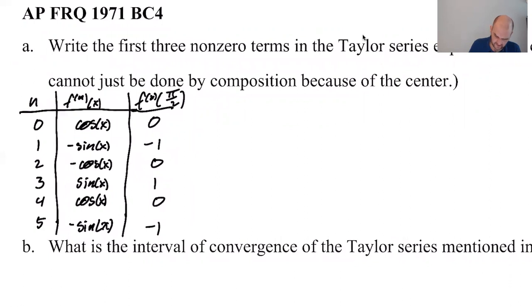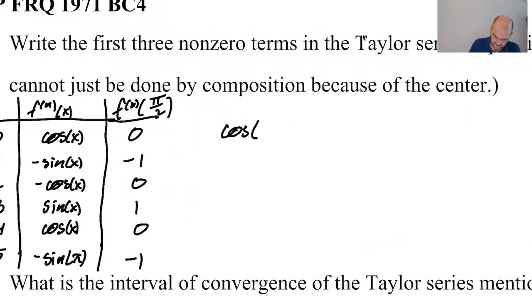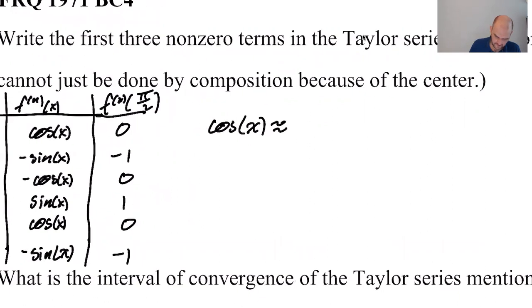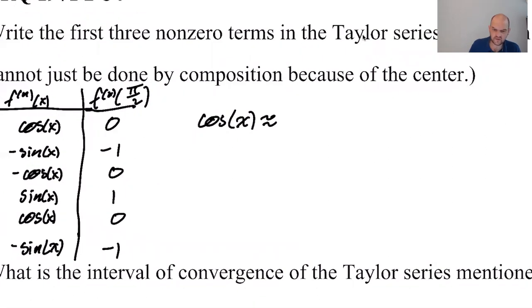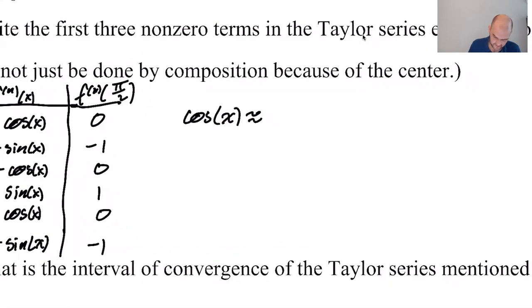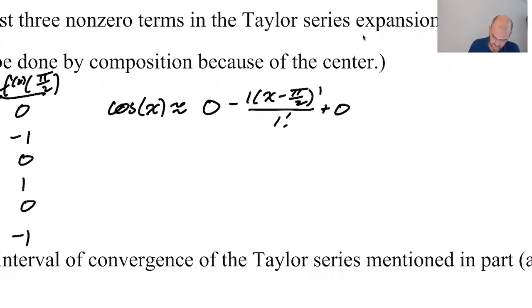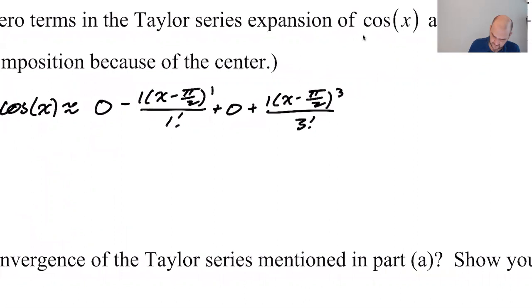And then just write it, right? So it's cosine of x is approximately. I'm going to put in the zero terms so that I don't mess up the pattern. You don't need to do that, obviously, but I do. X minus π/2 to the first, 1 factorial. 0, that's squared, plus 1, x minus π/2. That'll be cubed, 3 factorial. That's fourth. And then it'll be 1, x minus π/2 to the fifth over 5 factorial.